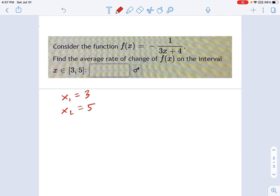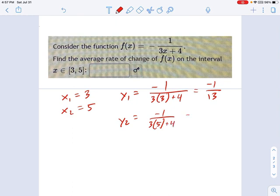Now, if x1 equals 3, then y1 equals negative 1 over 3 times 3 plus 4, which is negative 1 over 13, I think. And y2 equals negative 1 over 19. Great.